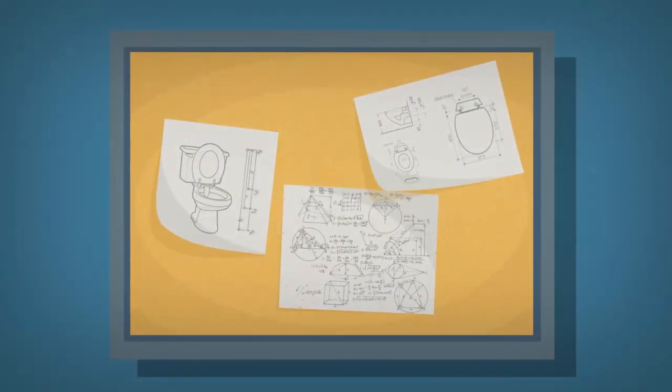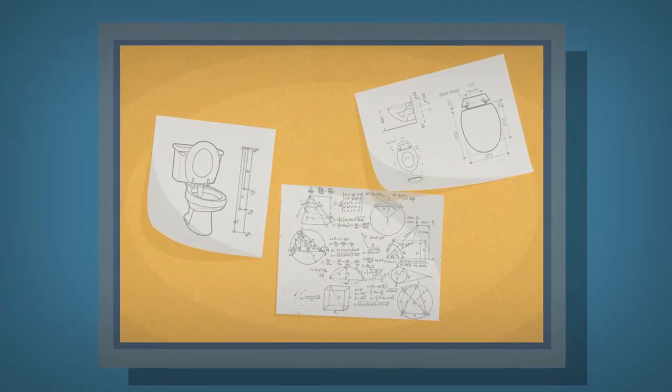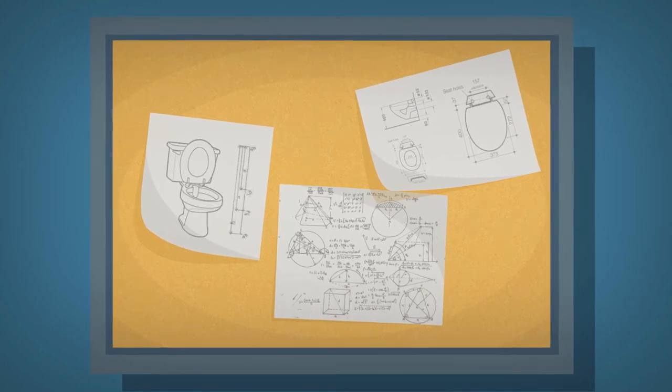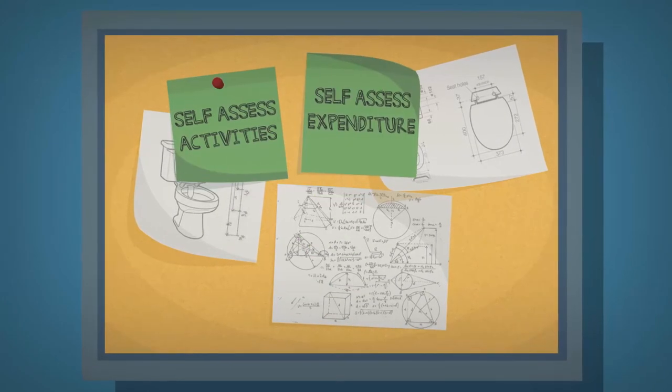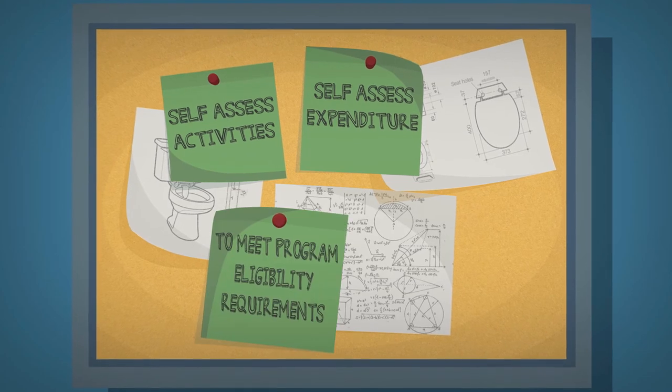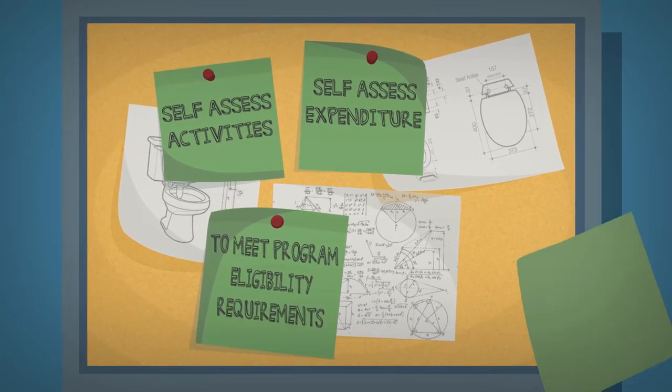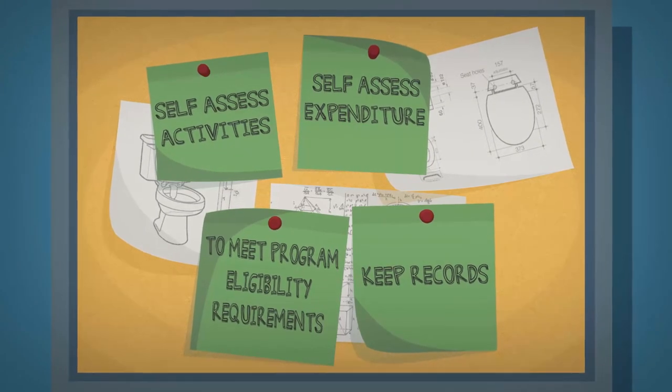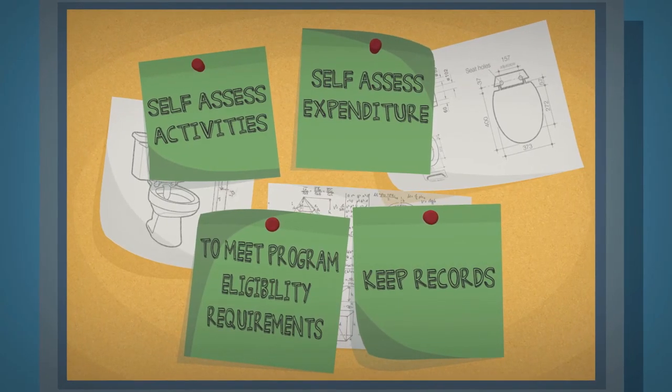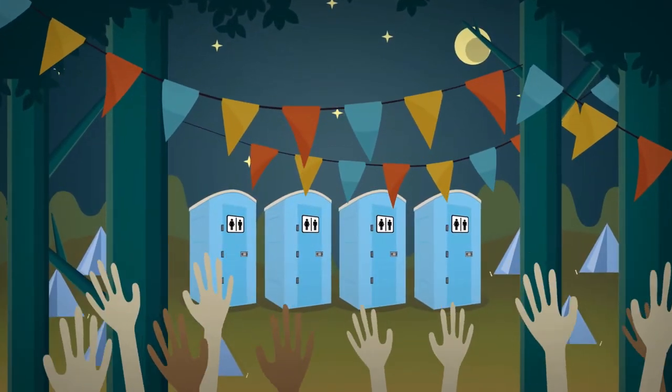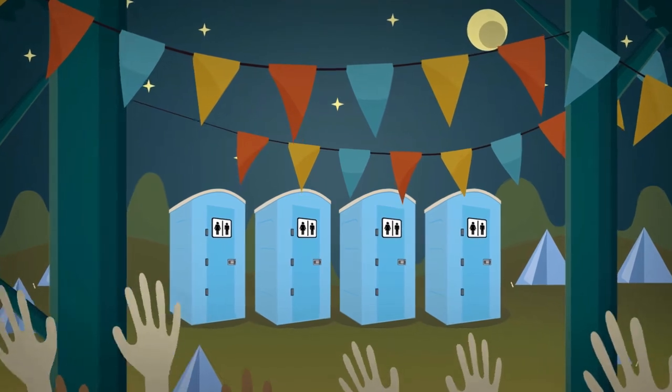As the R&D tax incentive operates on a self-assessment basis, it means claimants are responsible for determining whether their activities and expenditure meet the eligibility criteria of the program, and for maintaining records to support their registration or claim. In this way, EnviroLoo went ahead and created their unique design for eco-friendly, non-flushing toilets.